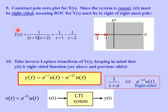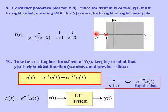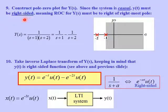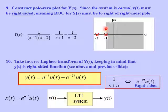Let's look at a pole-zero region of convergence plot for Y(s). We have a pole at s = -1 and a pole at s = -2, plotted here. Since this is a causal system, the output y(t) must be a right-sided function. For a causal system, the ROC has to be to the right of the rightmost pole, which gives us the ROC shown here.